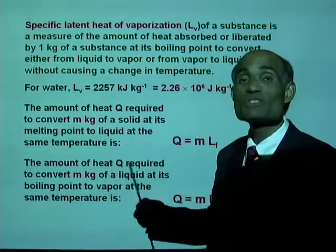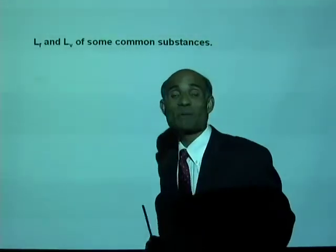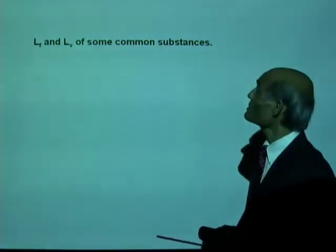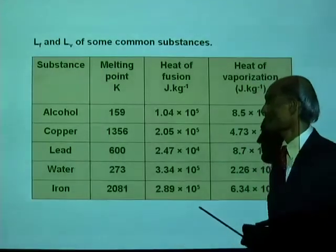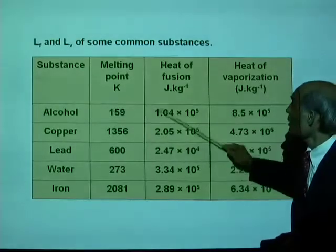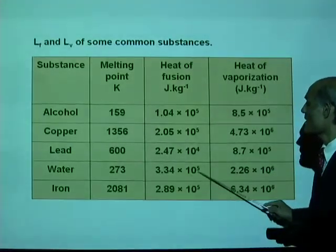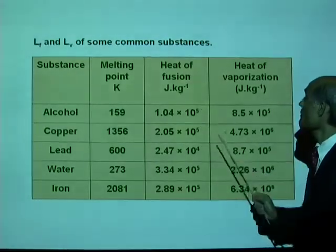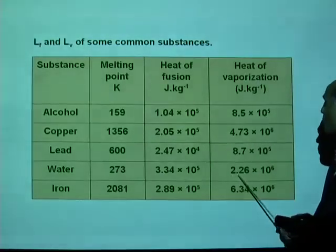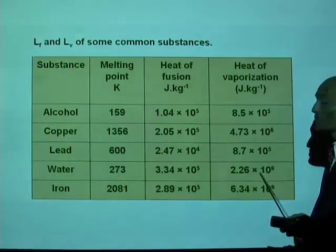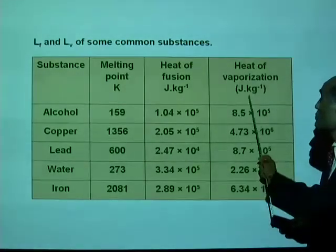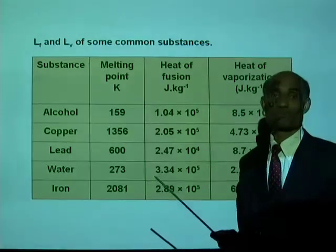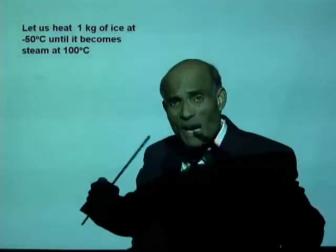We will now use these to do problems. Here is a table of values of latent heat of fusion and latent heat of vaporization of some common substances. The latent heat of fusion of water is 3.34 times 10 to the 5 joules per kilogram, and the latent heat of vaporization of water is 2.26 times 10 to the 6 joules per kilogram. We will be using some of these values as we solve problems.